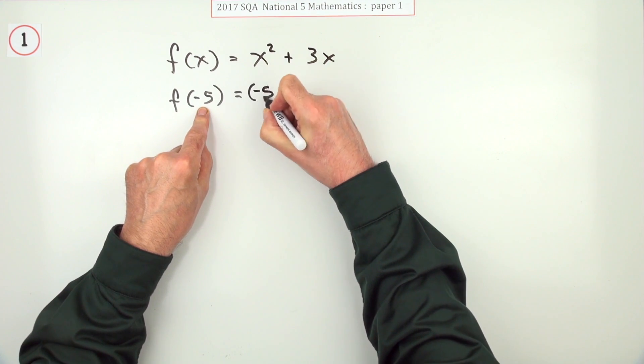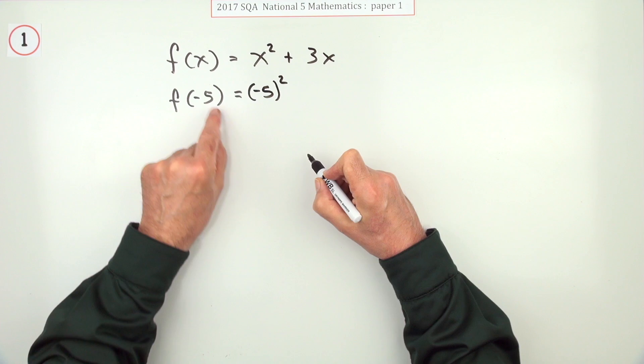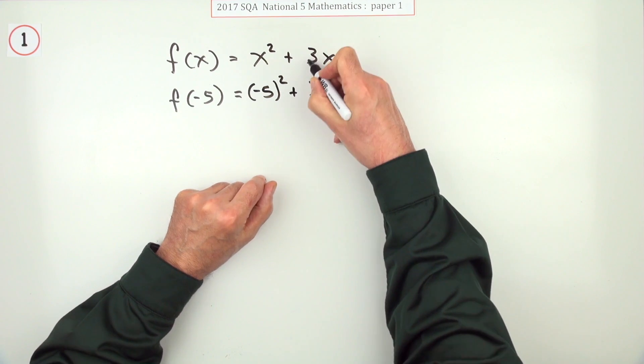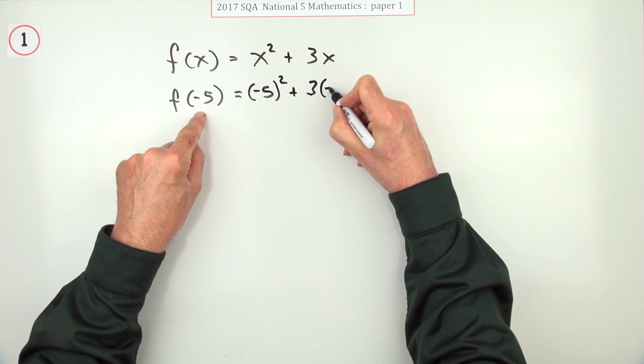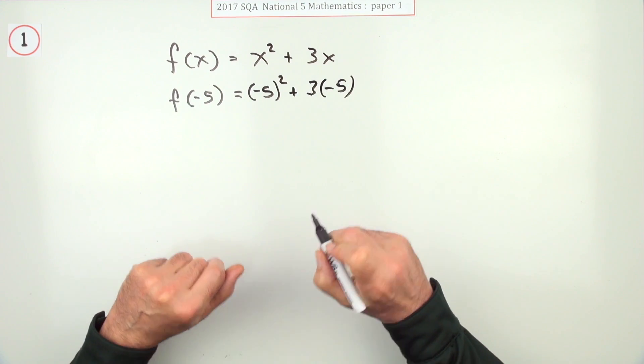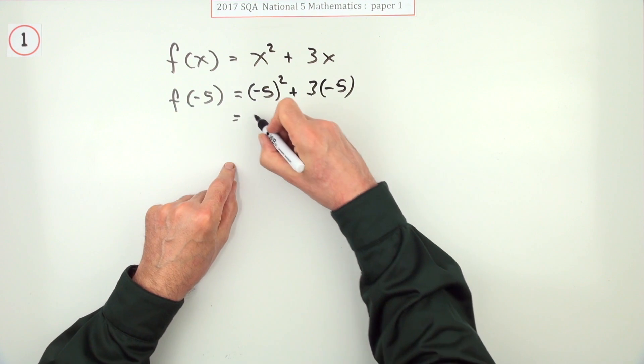So I'll give you a negative 5 and you'll square it. Remember to keep the negative inside the squaring, don't just square the 5. And I'll also add on 3 times what you give me, so I'll also add on 3 times negative 5.